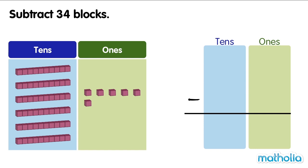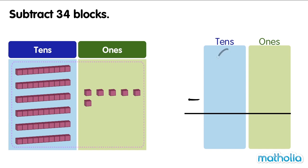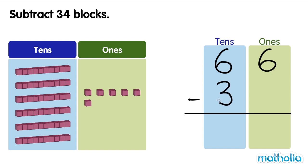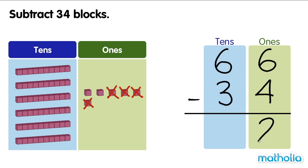Subtract 34 blocks. There are 66 blocks. We subtract 34 blocks. Start by subtracting the ones. 6 ones minus 4 ones equals 2 ones.